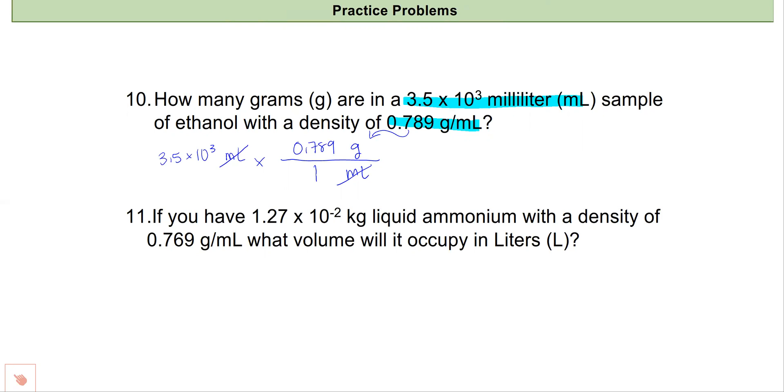And when I do this, plugging into my calculator, I get 2.7615 times 10 to the third grams. I'll report two sig figs because that's what I started with, and that'll give me 2.8 times 10 to the third grams. So I've effectively converted between volume and mass.